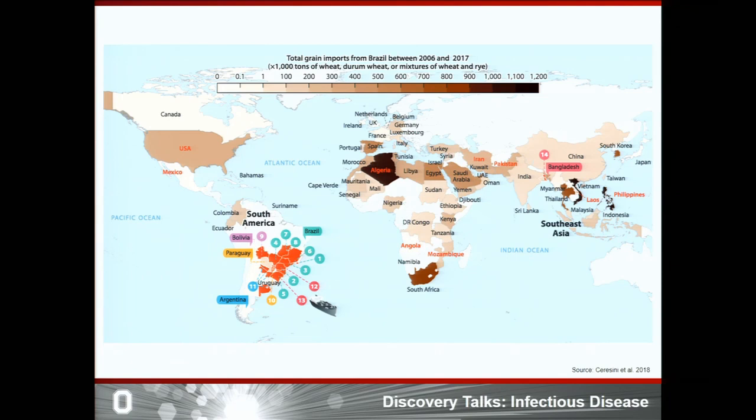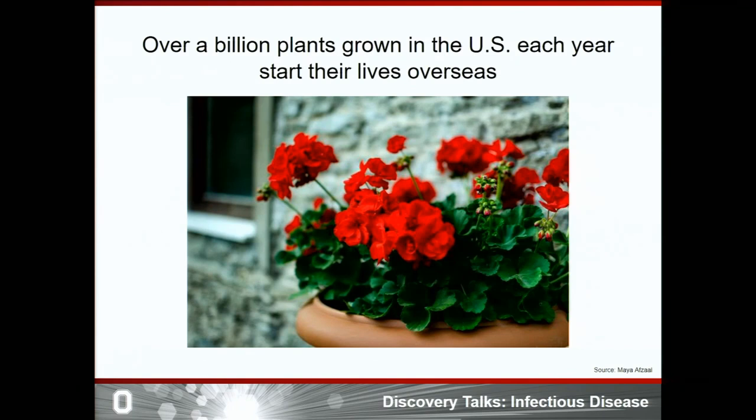Invasive species are a serious and global problem, also introducing many different microbiomes. Over a billion plants are grown in the US each year; they start their life overseas, and infected nursery and greenhouse stock ships local microbiomes capable of infecting our environment. The second aggravating factor is climate change.